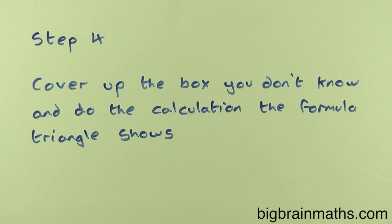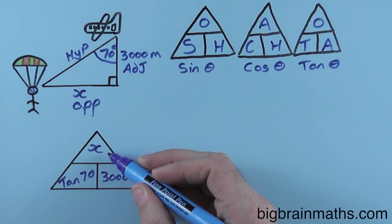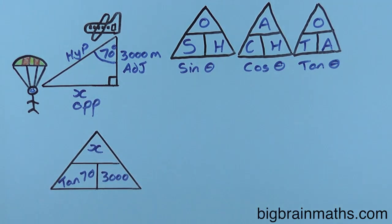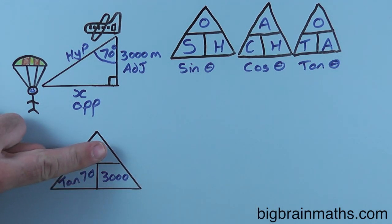Step 4: Cover up the box you don't know and do the calculation the formula triangle shows. So, we don't know this box, X, which was the horizontal distance that I flew forwards today under my wingsuit. To calculate X, we need to cover it up, and the formula triangle shows that we need to multiply these two boxes together. Because when the boxes are next to each other in a formula triangle, it means multiply.